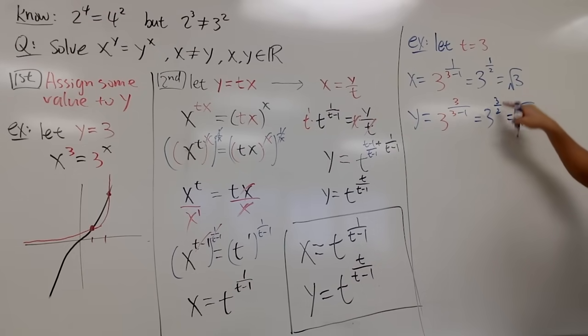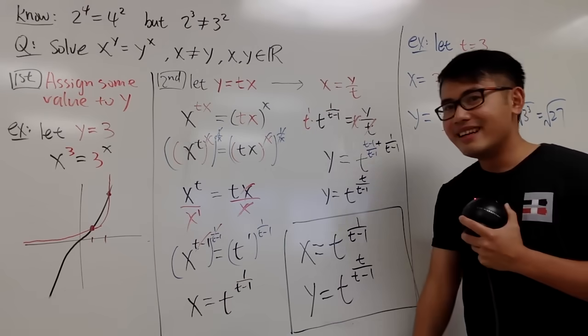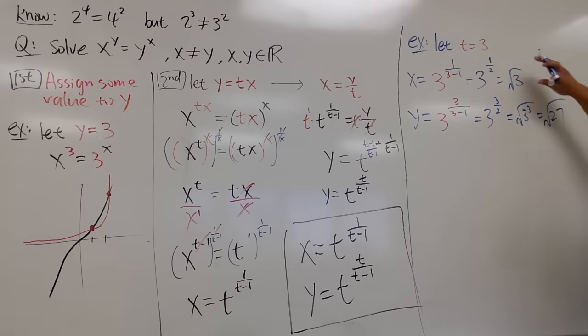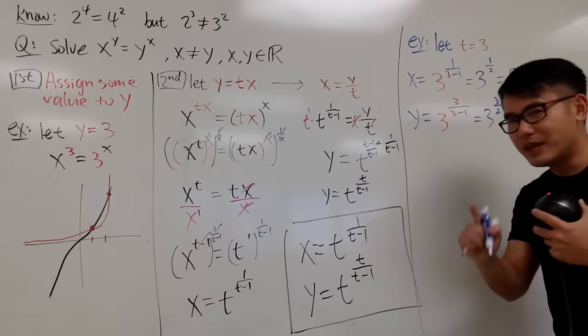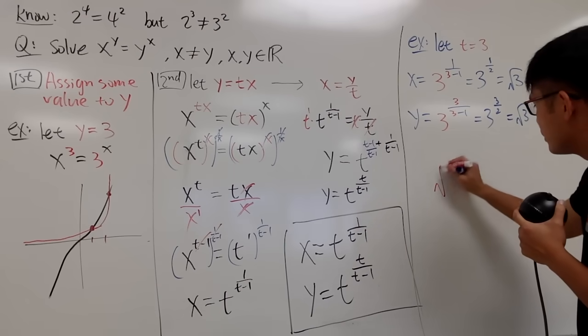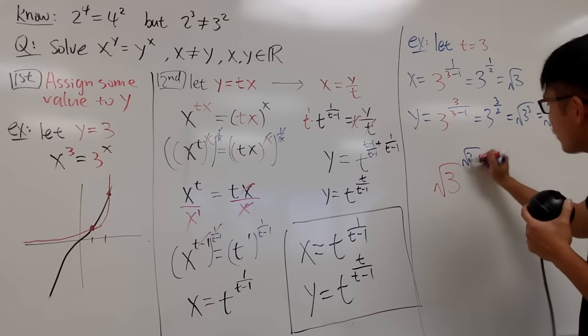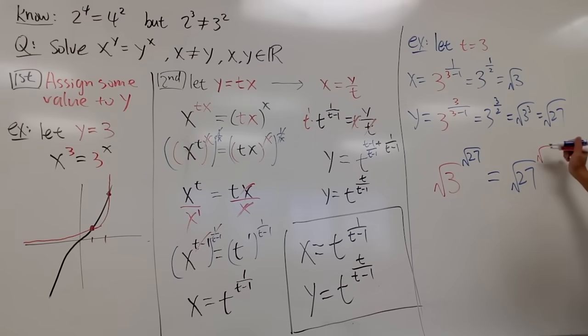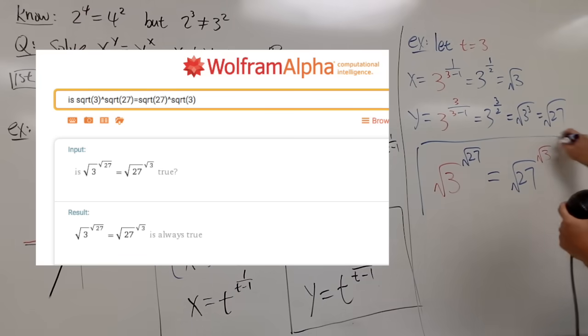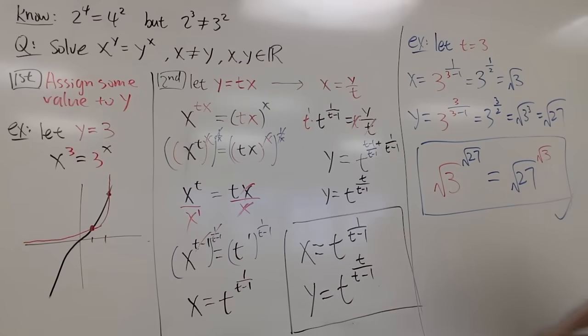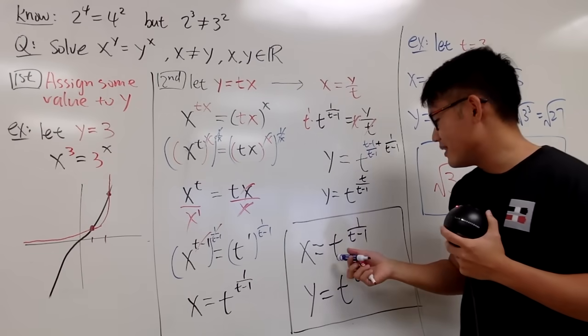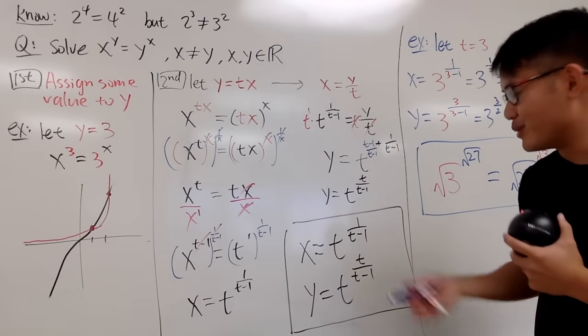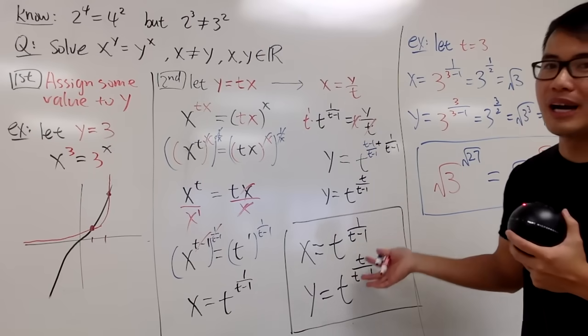And now you see, you generated this and that. And it's guaranteed that when you have square root of 3 for the base, and then square root of 27 for the power, this will actually be square root of 27 for the base, and then square root of 3 for the power. This is real cool, right? And you can pick any other t that you want. Don't be too crazy, but you can have fun with this.